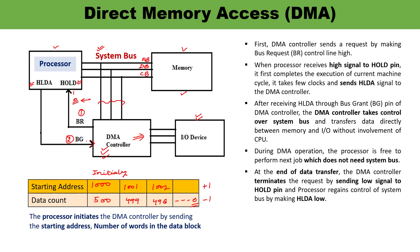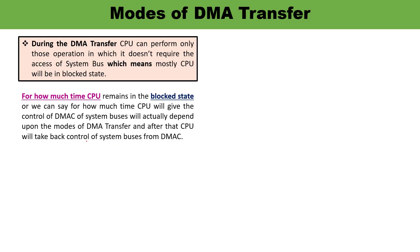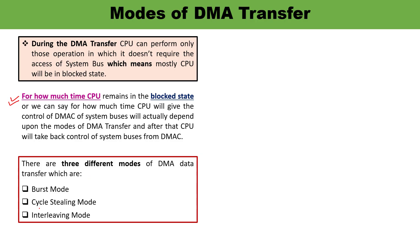Now there are three types of modes of data transfer for DMA. The system buses are required by the DMA controller during data transfer between IO devices and memory, and during that time the CPU can only perform operations that do not require the system buses. There are three modes: burst mode, cycle stealing mode, and interleaving mode.